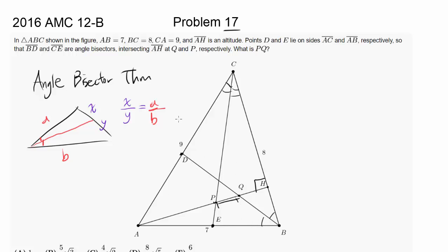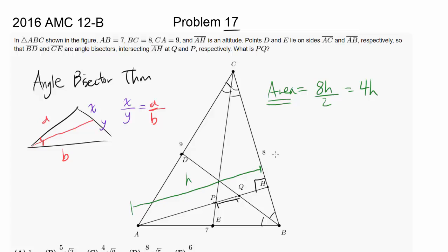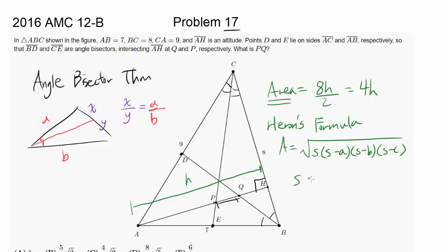I started by finding the altitude length. Using base times height divided by 2 gives the area of the triangle, so area equals 8 times H divided by 2, or 4H. I found the area using Heron's formula, which states area equals the square root of s times (s minus a) times (s minus b) times (s minus c), where s is the semi-perimeter. The perimeter is 8 plus 9 plus 7 which is 24, so s equals 12.